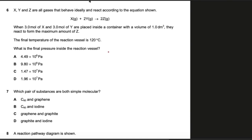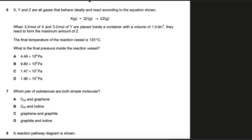Question 6: X, Y, and Z are all gases that behave ideally and react according to the equation: 1 mole of X reacts with 2 moles of Y to form 2 moles of Z. When 3 moles of X and 3 moles of Y are placed inside a container of volume 1 dm³, they react to form the maximum amount of Z. The final temperature is 120°C, which must be converted to Kelvin. First, find the limiting reagent. For every 2 moles of Y, 1 mole of X is used, so for 3 moles of Y only 1.5 moles of X are needed — meaning 1.5 moles of X are in excess and Y is the limiting reagent.